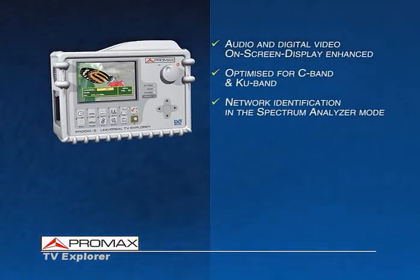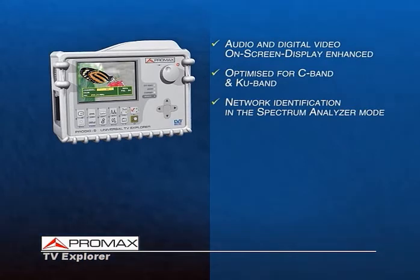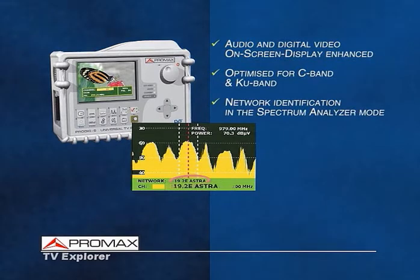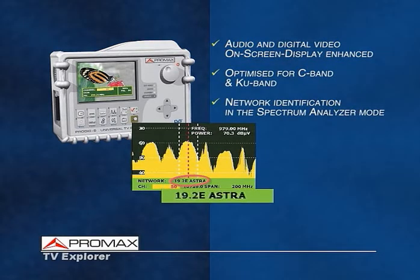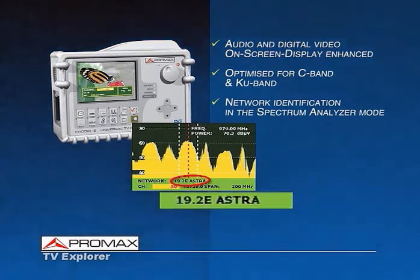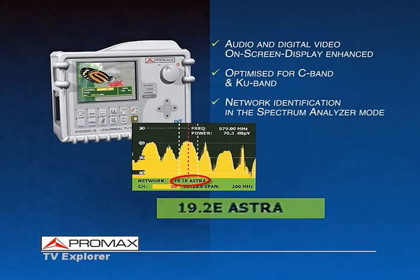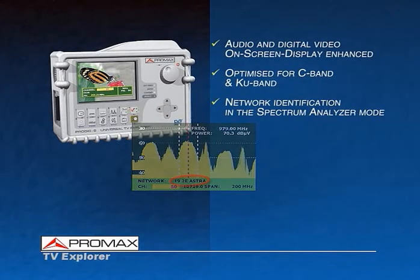When carrying out an automatic identification process from the spectrum analyzer mode, the TV Explorer holds on-screen the network name in order to do a better channel identification. This is valid for satellite as well as terrestrial signals.